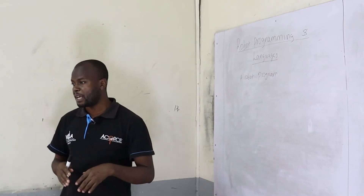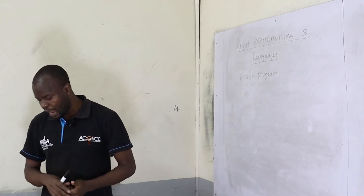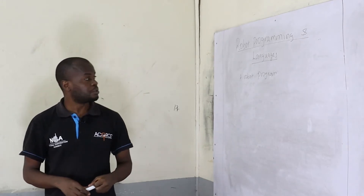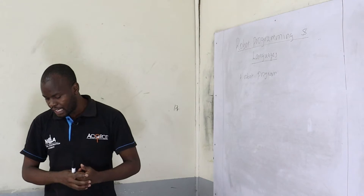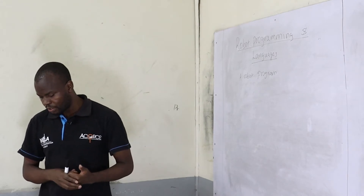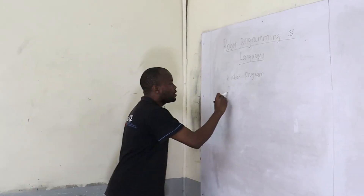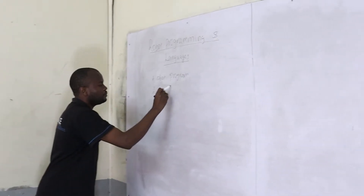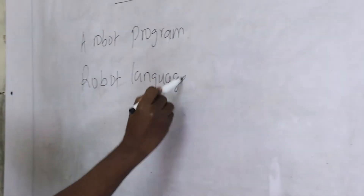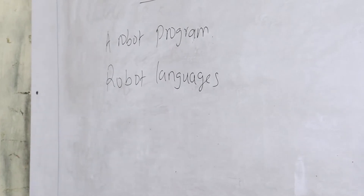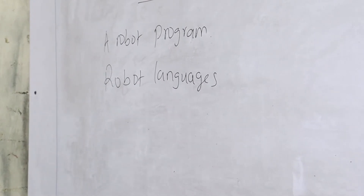When you talk about the robot environment, there will be several pieces of equipment found in that particular robot cell, and therefore there is a need for communication to take place. Now we can talk about robot languages — these are languages that have been developed for the ease of controlling the motions of the robot.